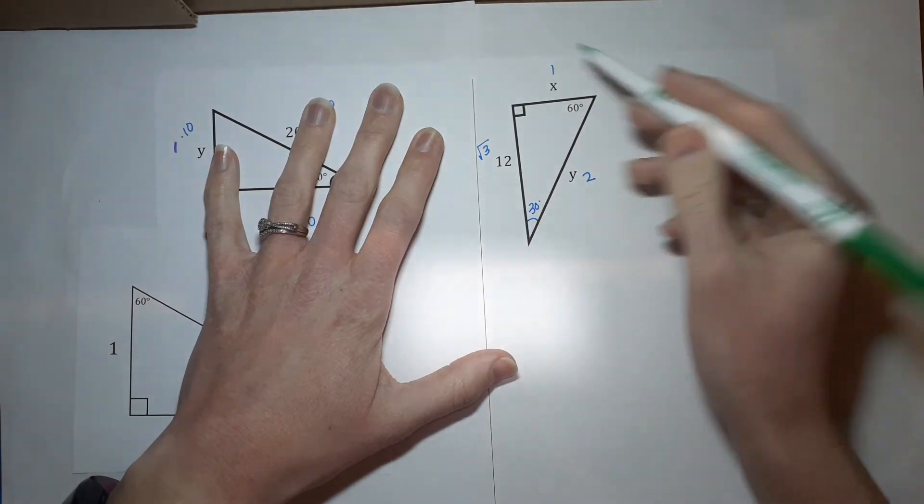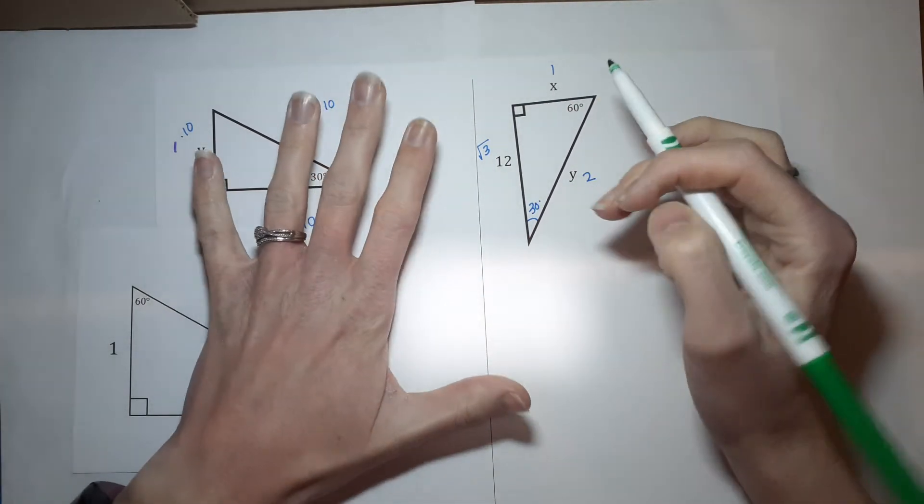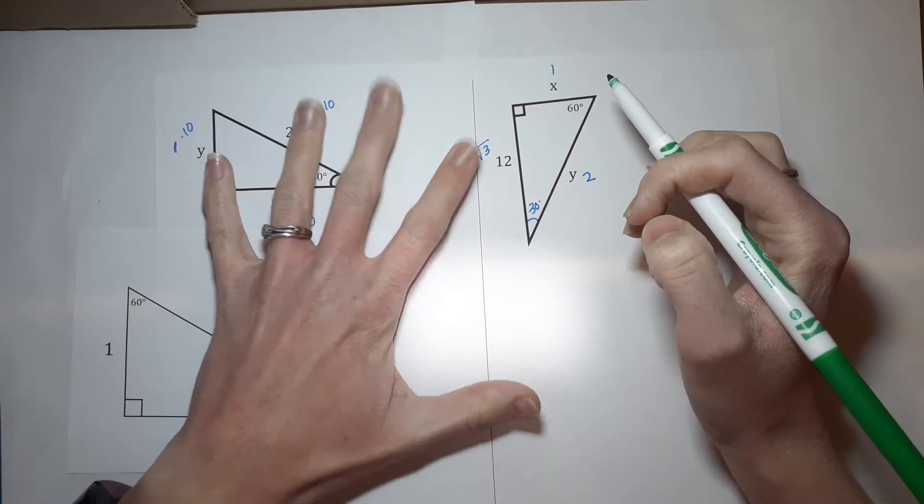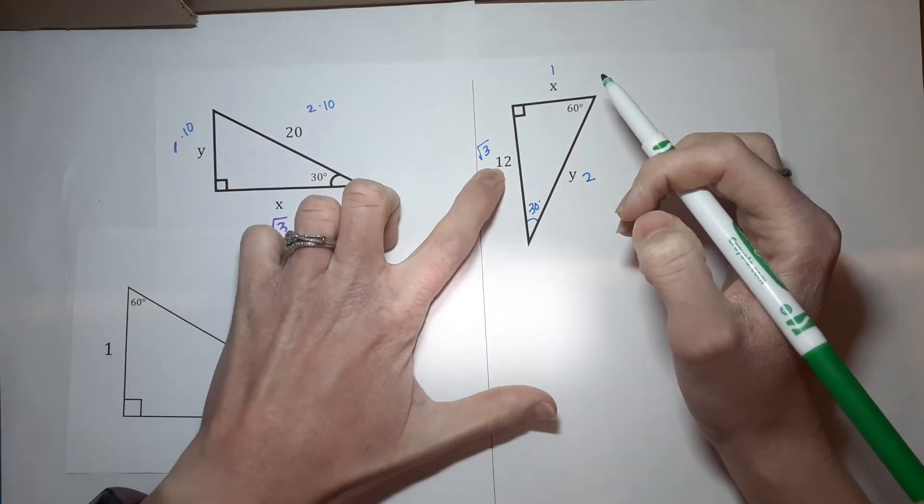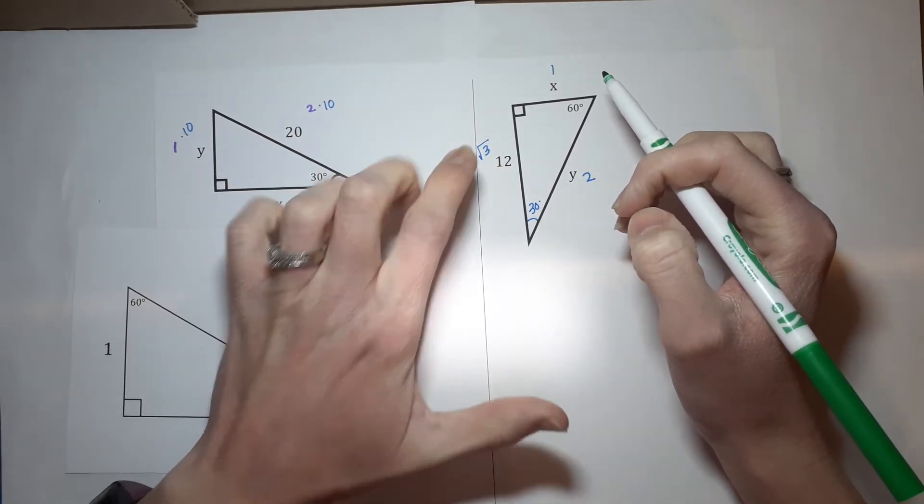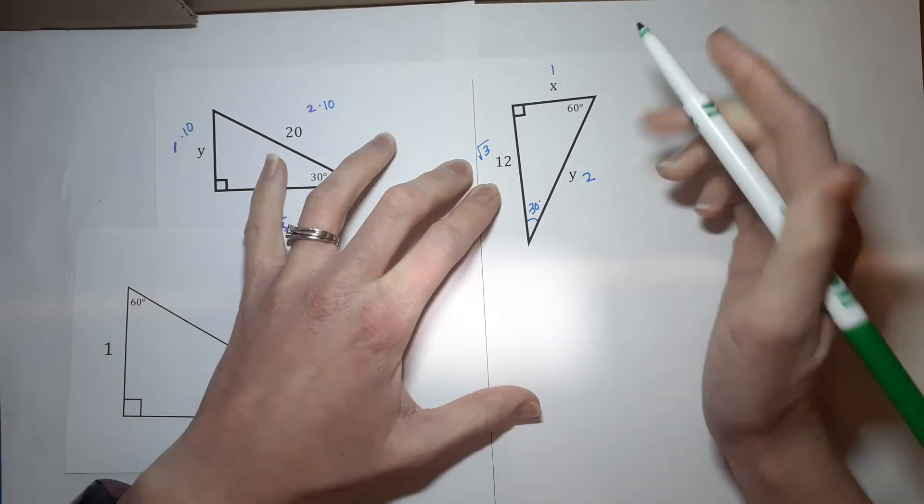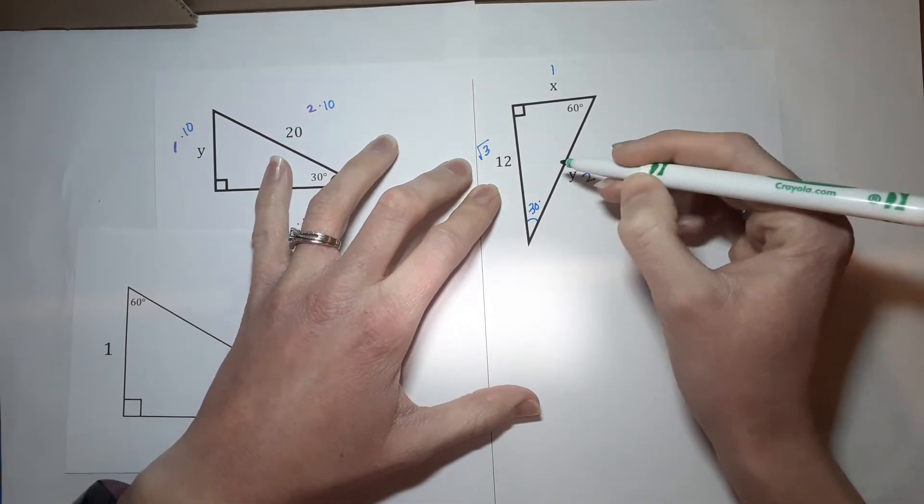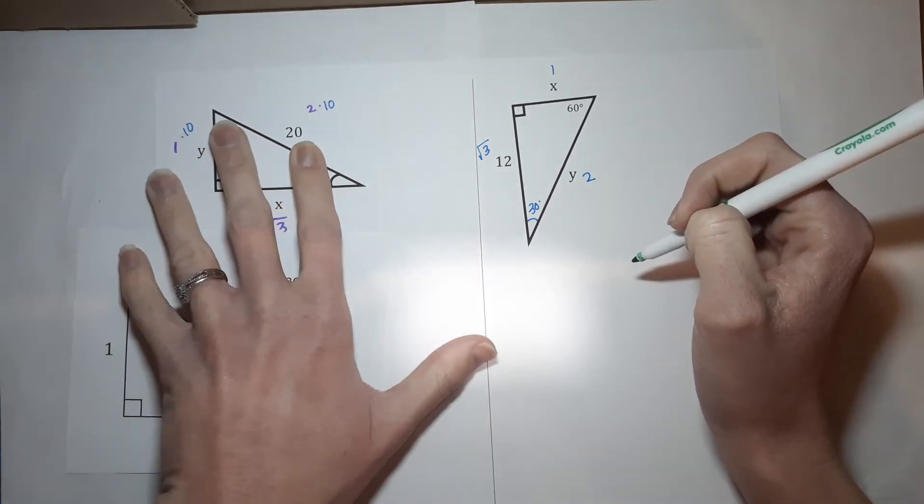So, how are these related? What we're going to do is, it's all about the relationship between these numbers. 12 and the square root of 3 are related in the same way whatever y is and 2.